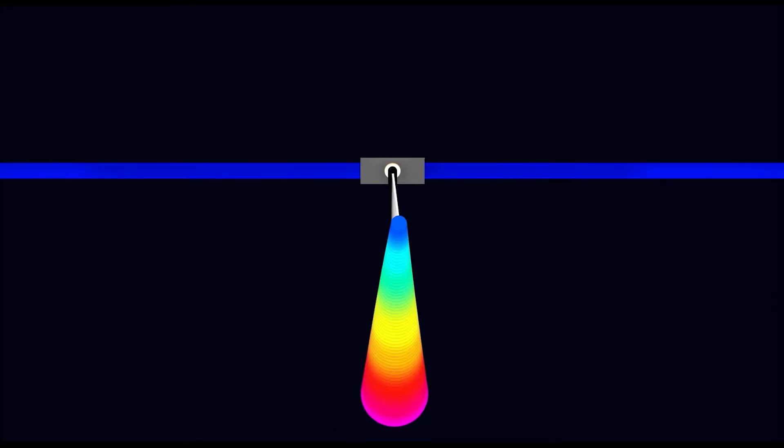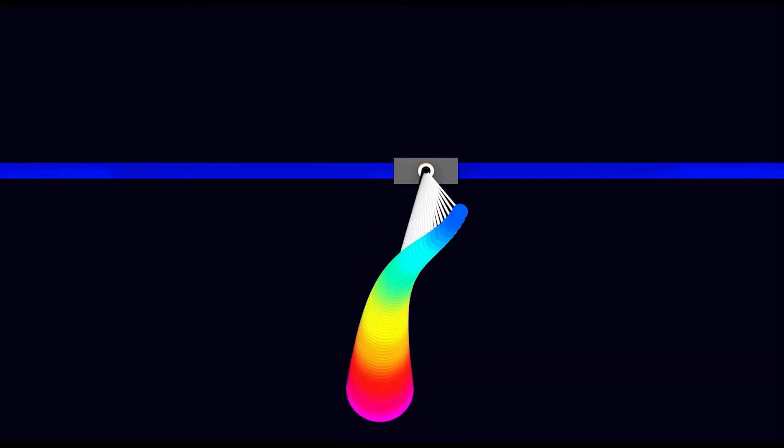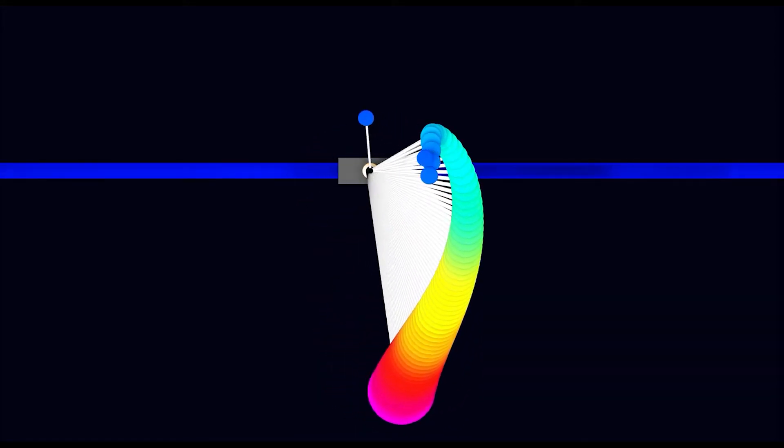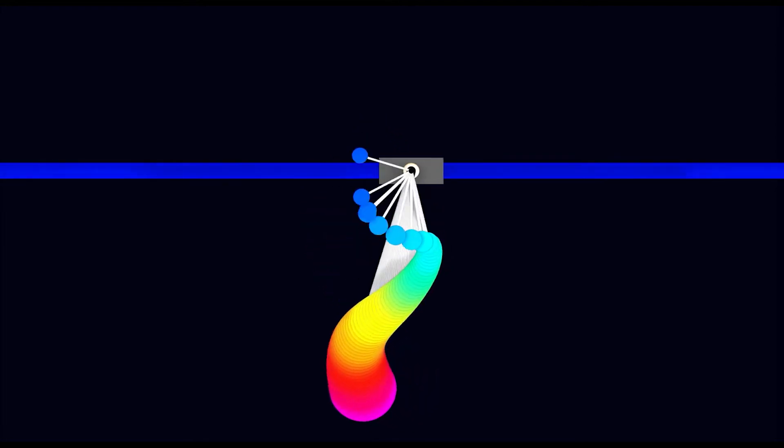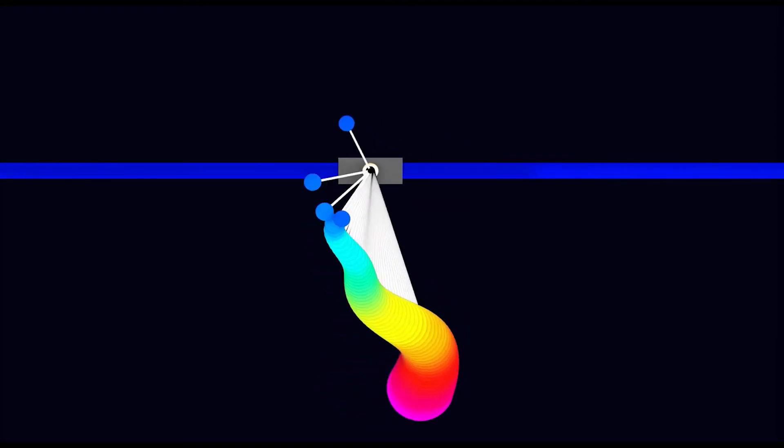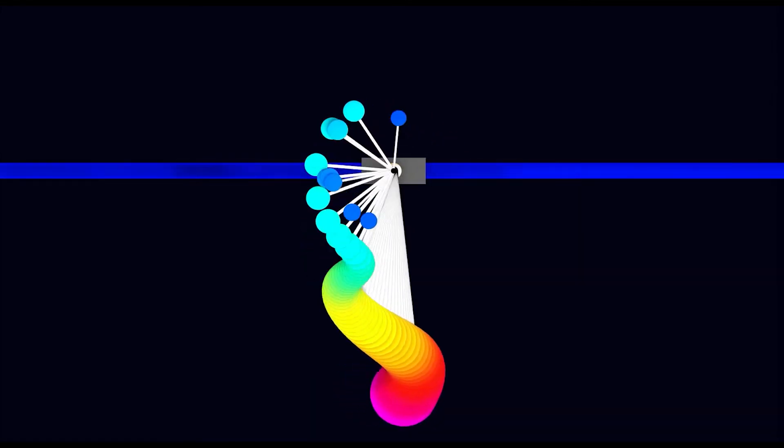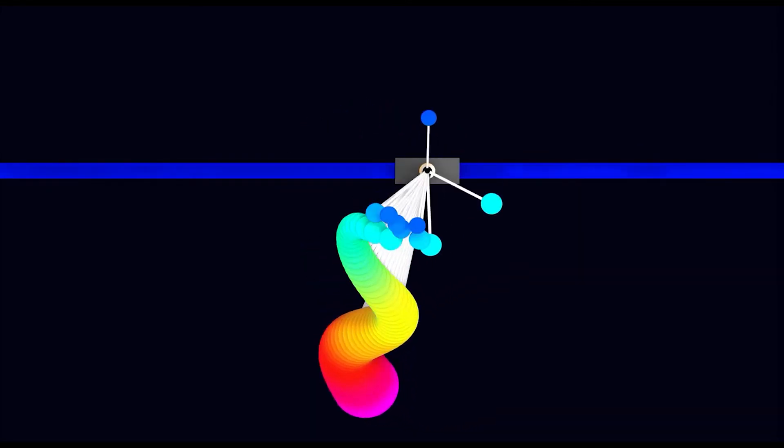For a simple example, consider the pendulum that we looked at and subject that to forcing, maybe by shaking it back and forth. What you'll see is that forcing term, that injection of energy into the system, gives rise to some really interesting behaviors.